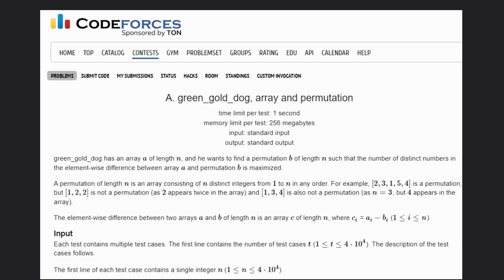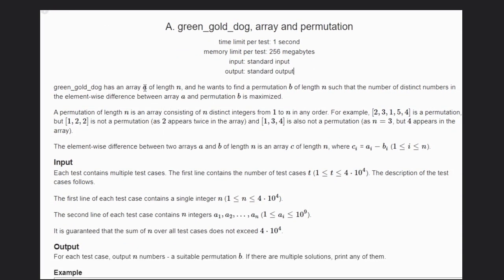So in this problem we have an array of length n and we want to find a permutation b such that the number of distinct numbers in the element-wise difference between array a and permutation b is maximized.